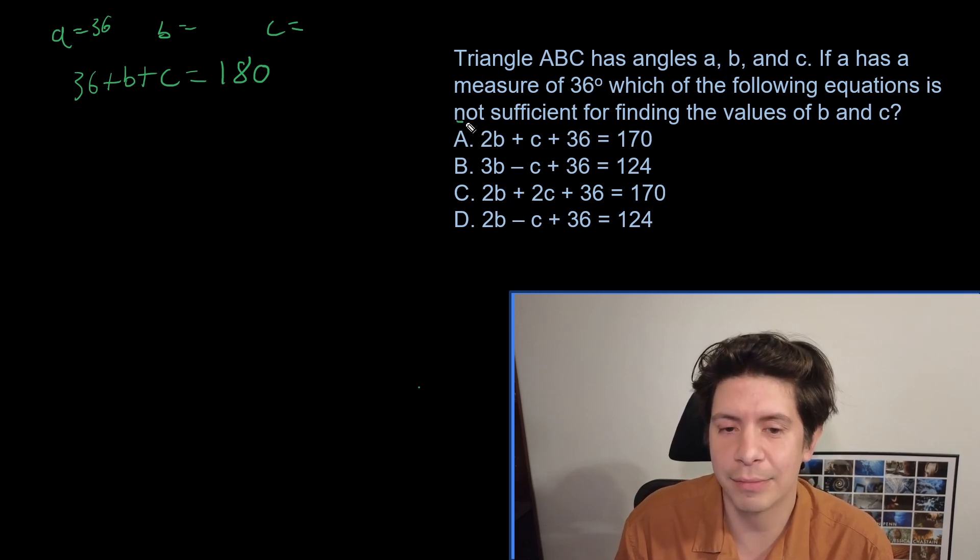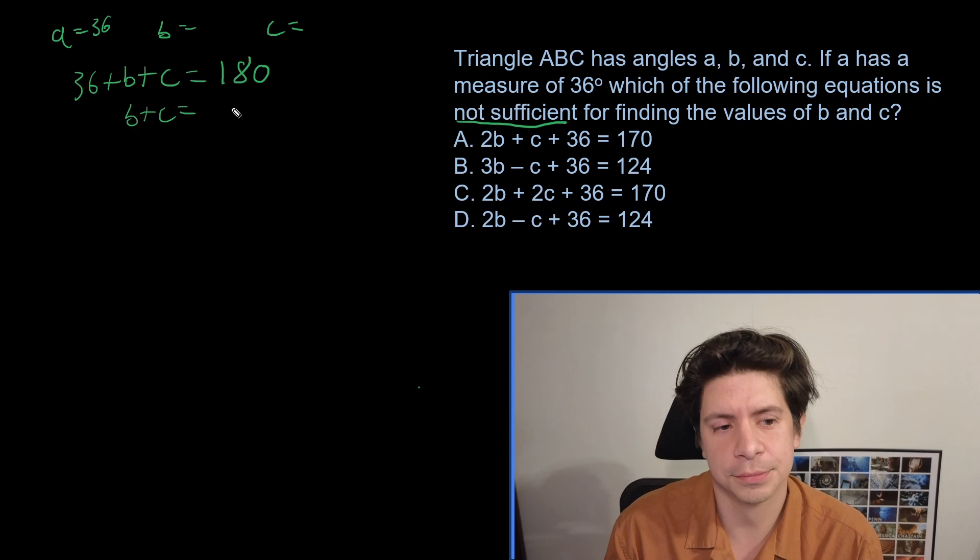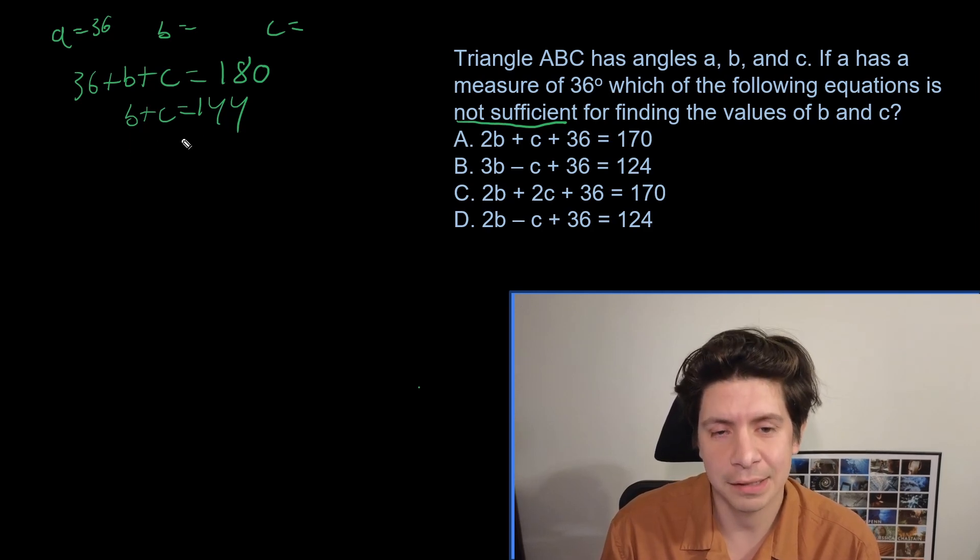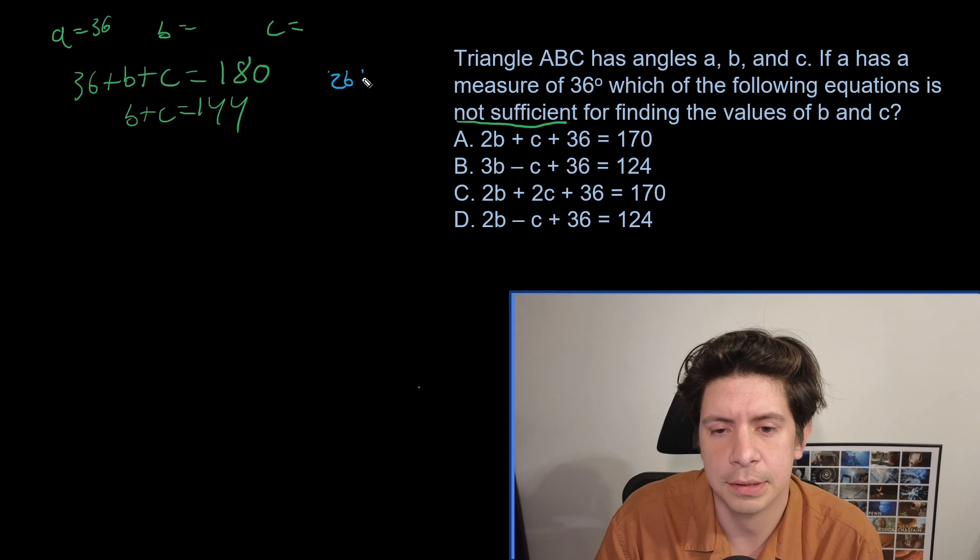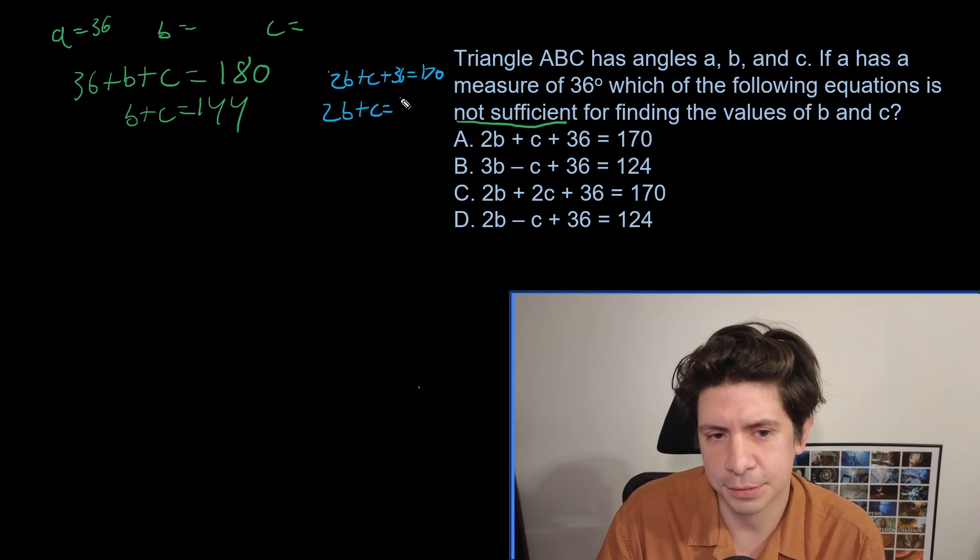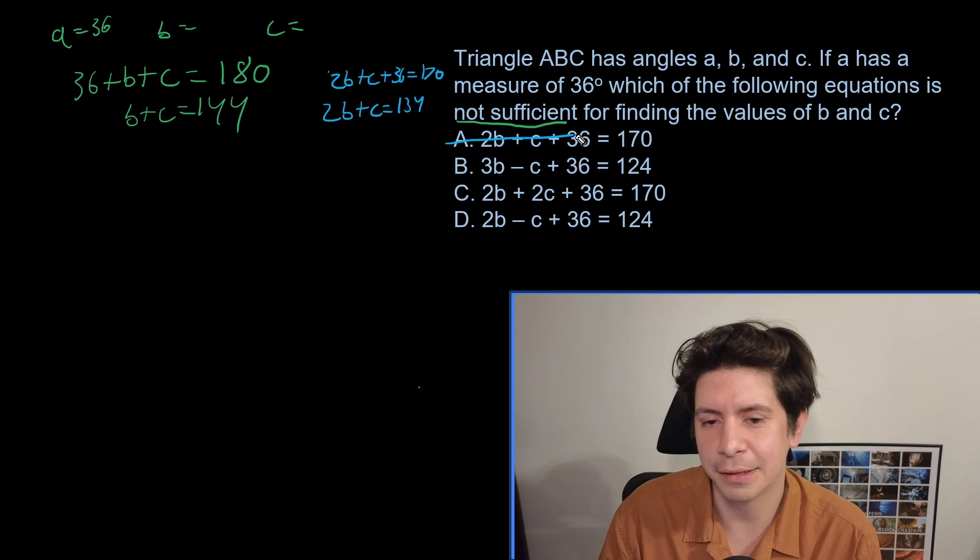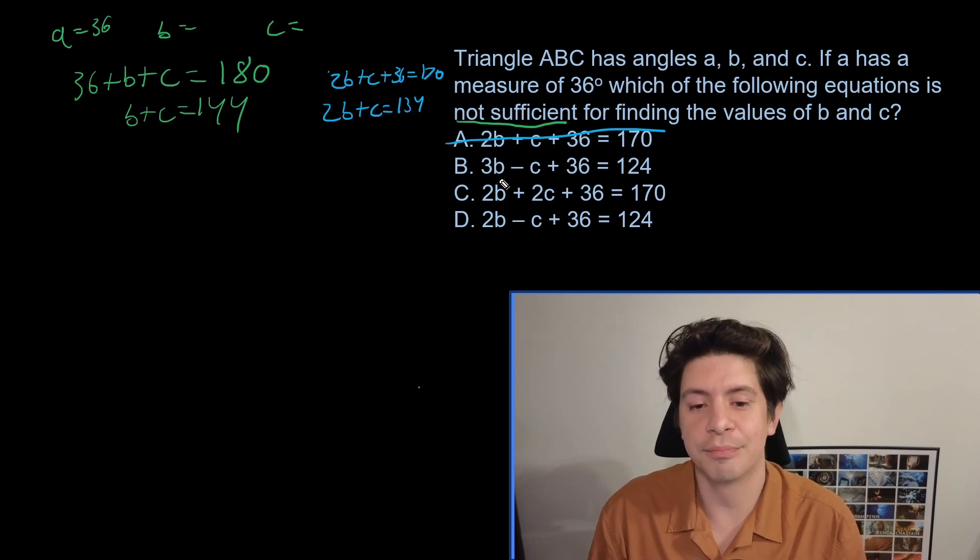So three of these will work and one of them is not sufficient. You're going to get B plus C equals 144, but it doesn't actually matter what B plus C equals. It's just that B plus C equals something. If we also got B plus C again, they would cancel each other out totally and then it would not work. So if we did A, 2B plus C plus 36 equals 170, then we subtract 36 and we're going to get 2B plus C equals 134. And with that we could solve using systems of equations.